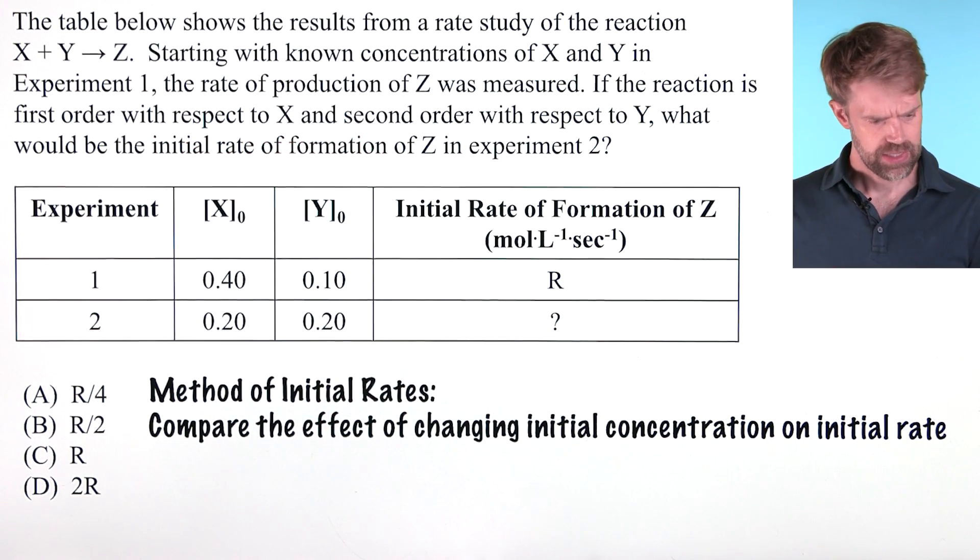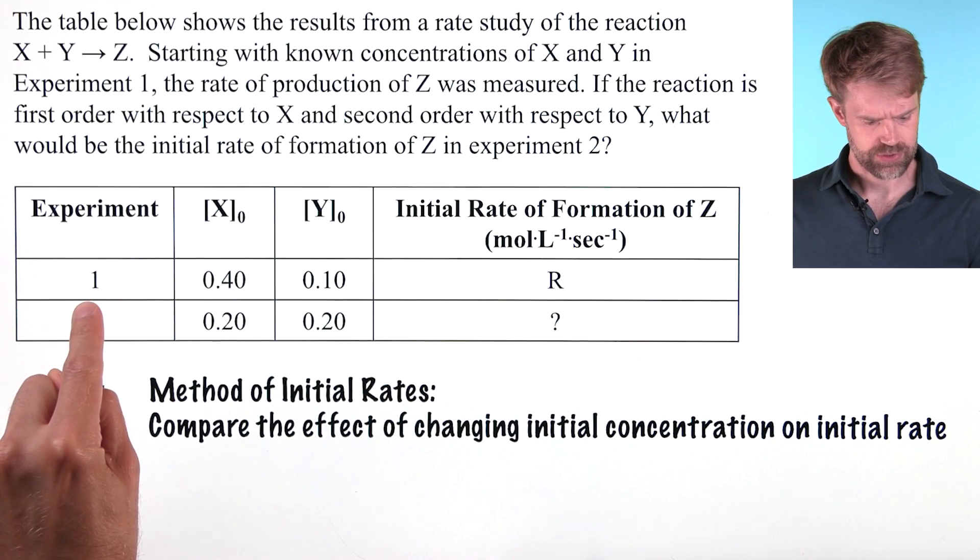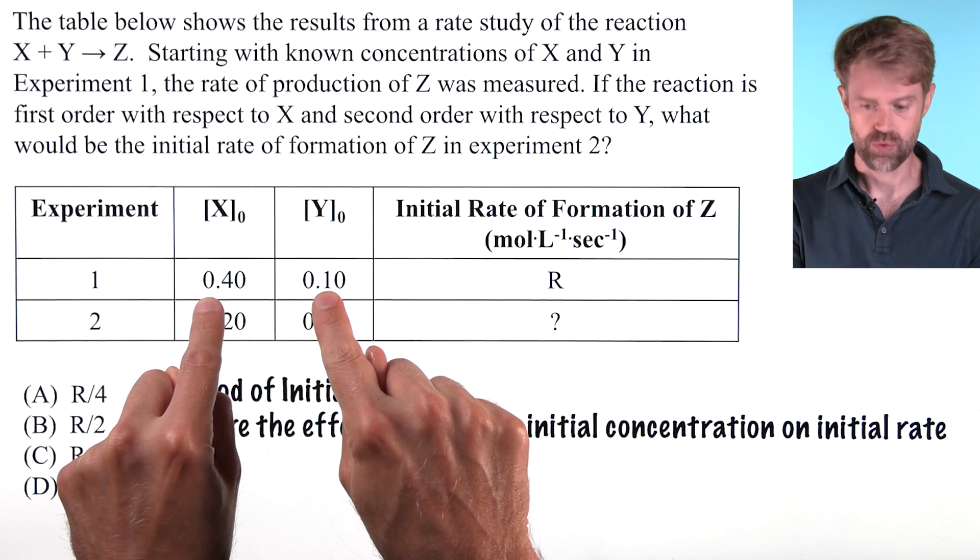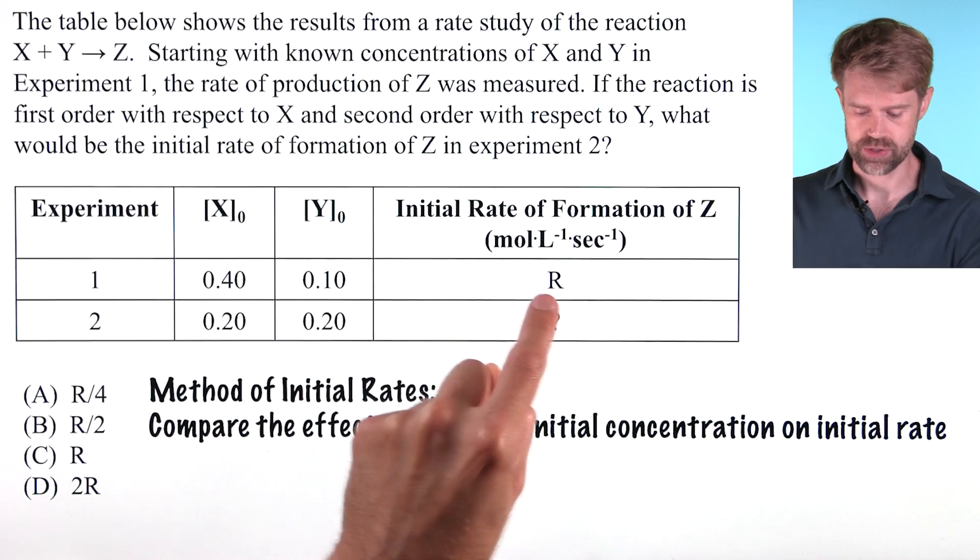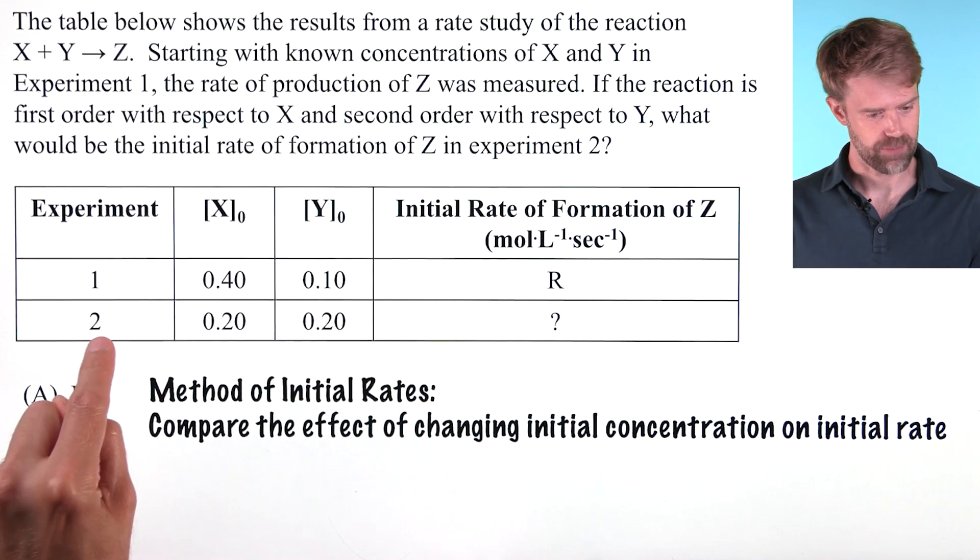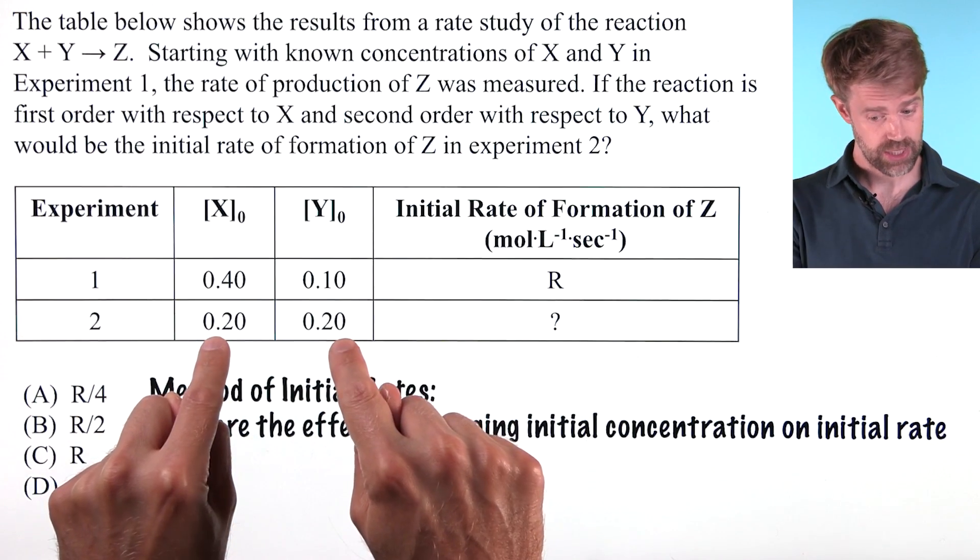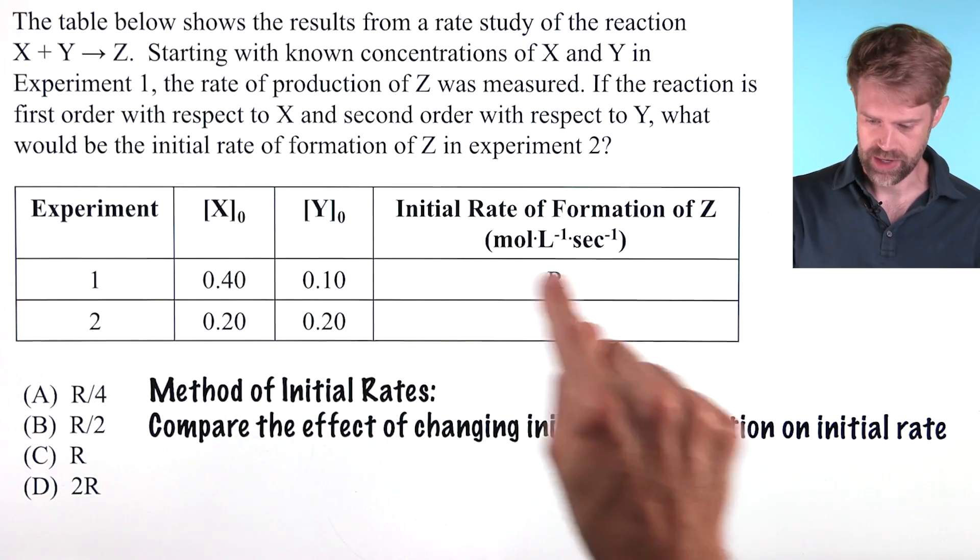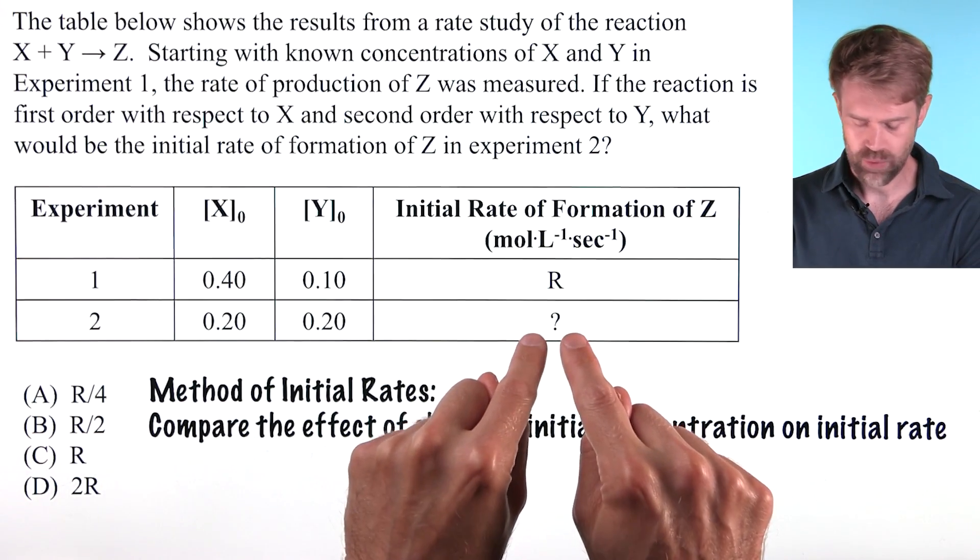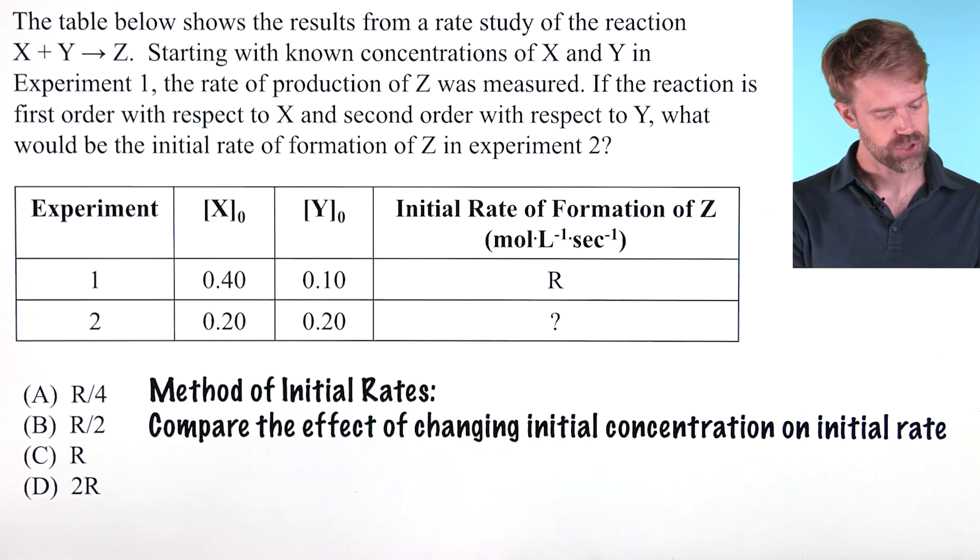So here for experiment 1, we're given concentrations of X and Y. The rate for this set of concentrations is R. Then in experiment 2, the concentrations change and we need to determine the new rate and figure out how it will compare to R.